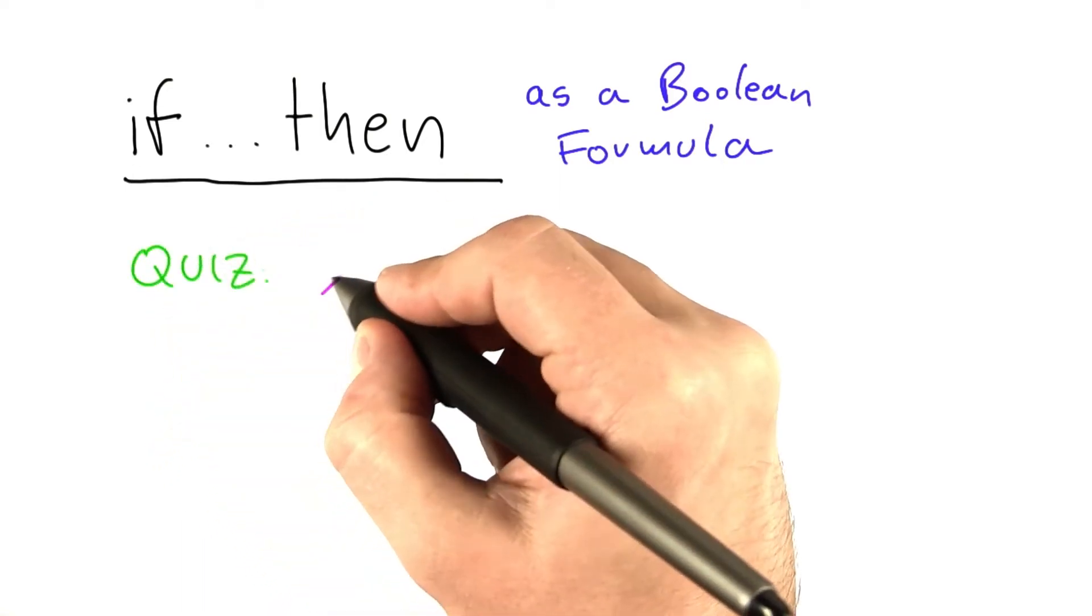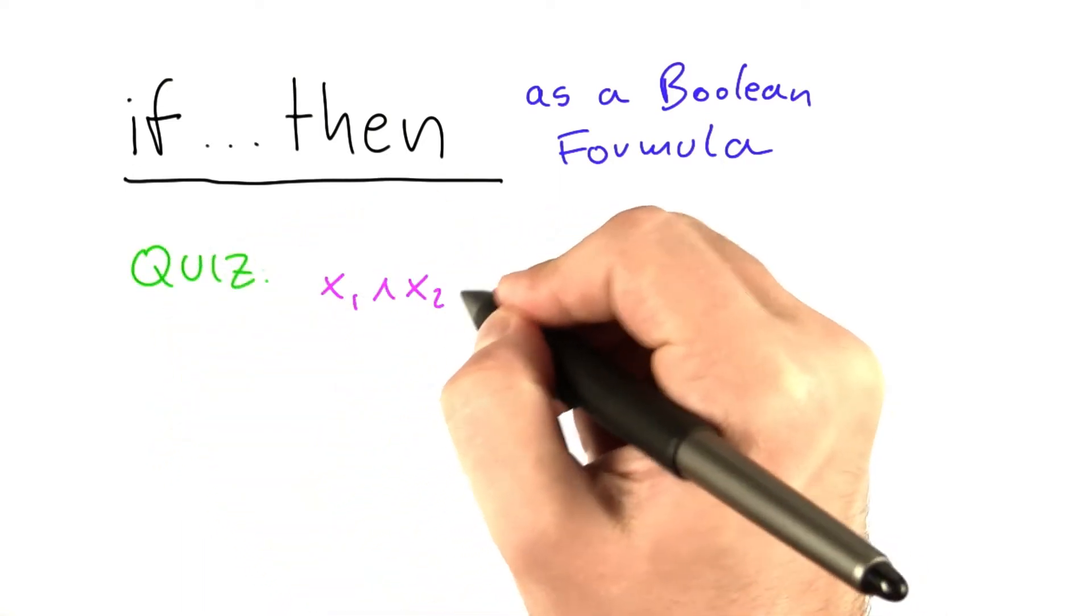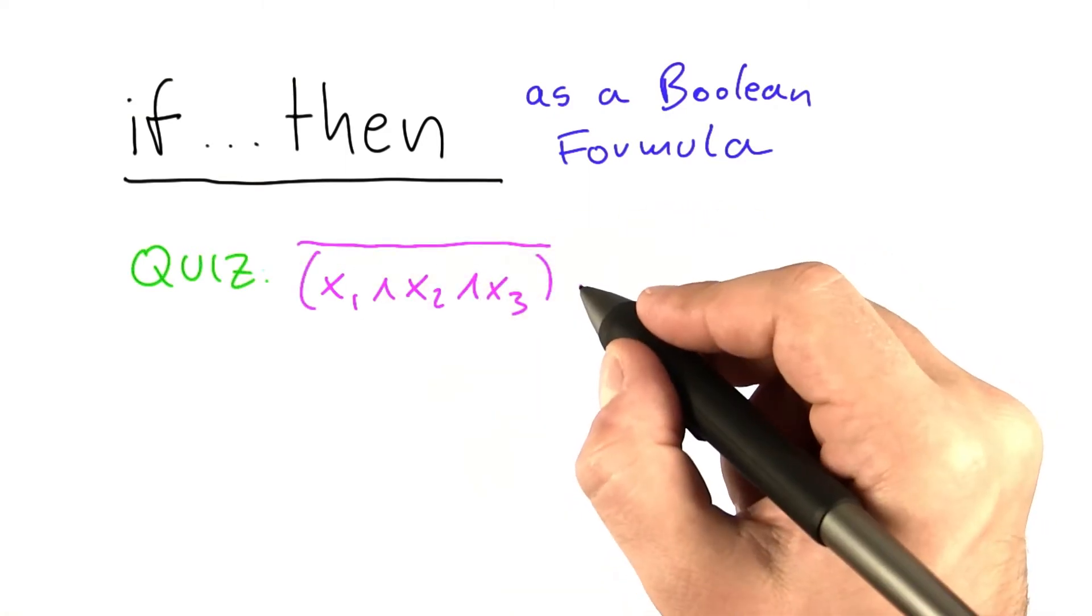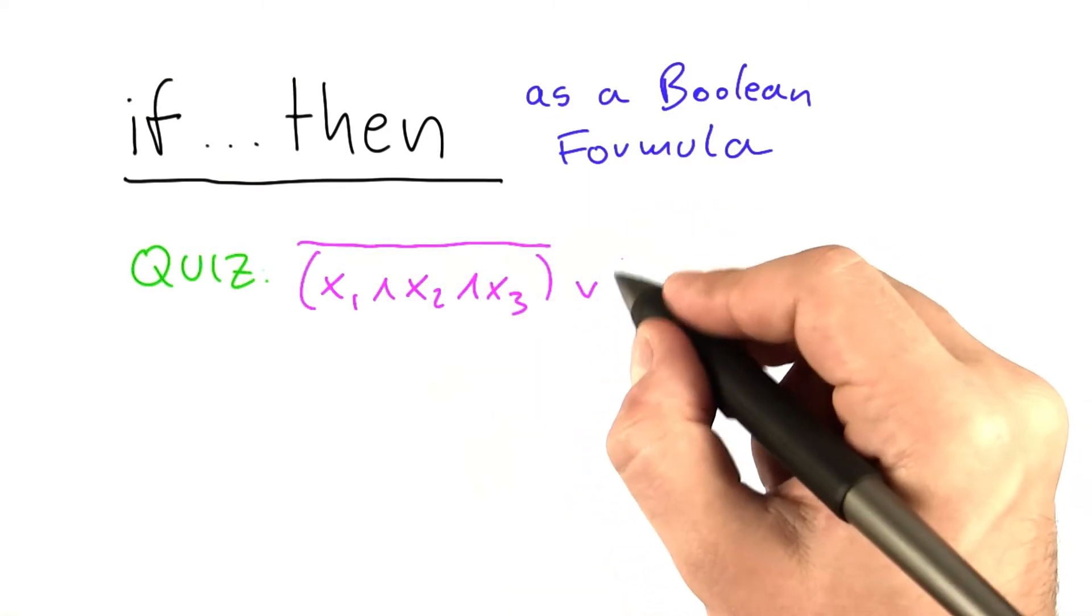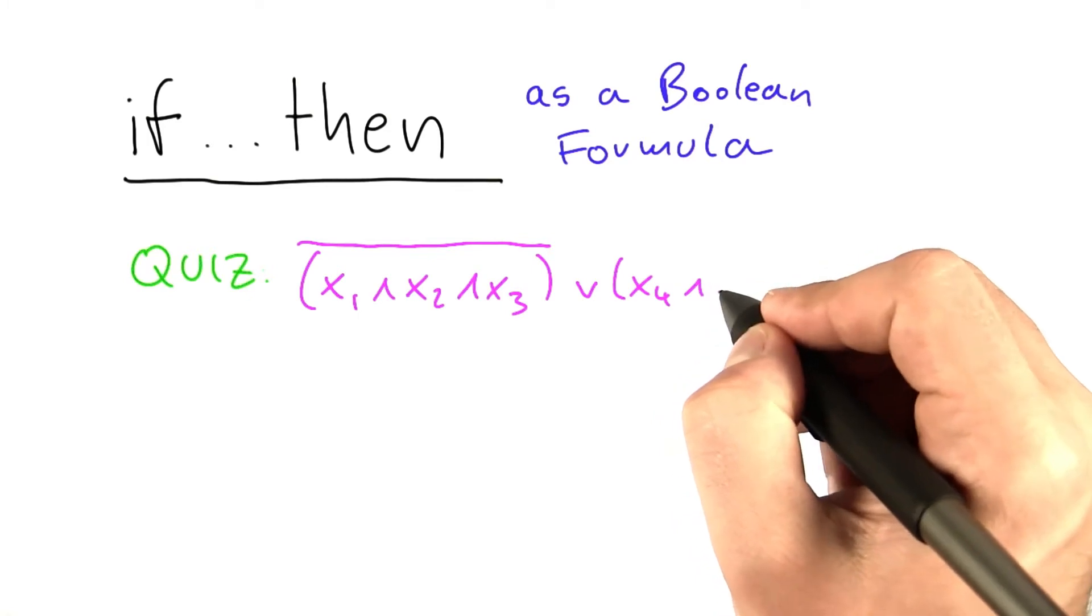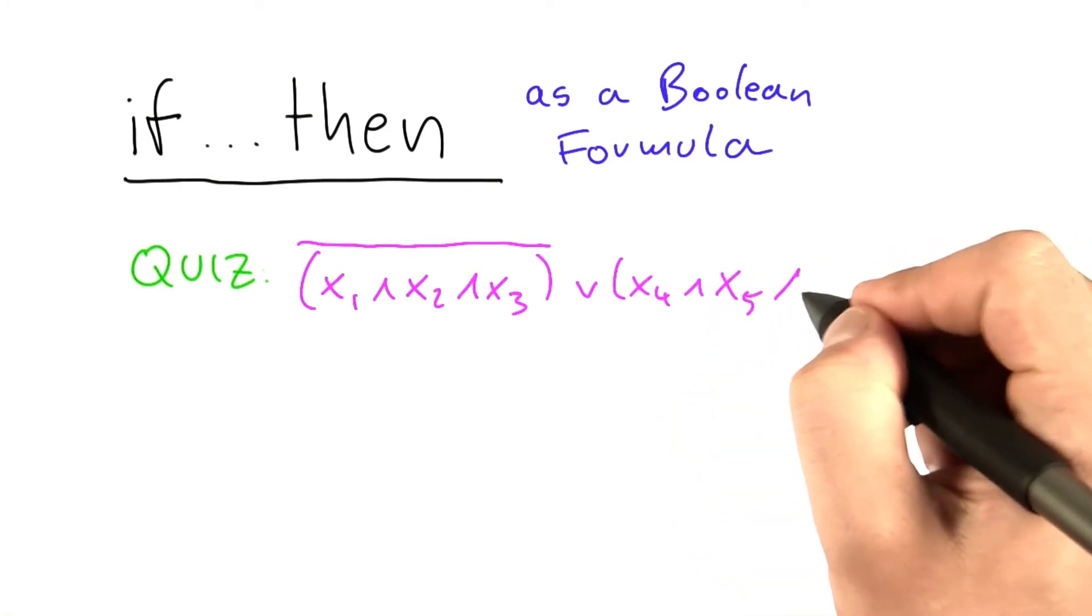So I'm going to give you the following Boolean formula: x1 and x2 and x3, we're going to do a big not over this, or x4 and x5 and x6.